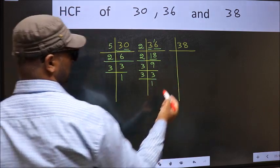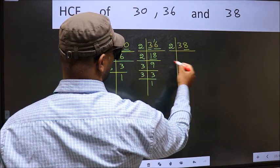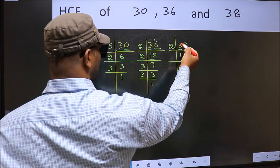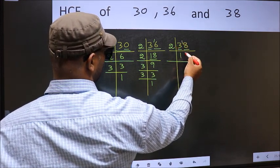Now the other number. Last digit 8, even so take 2. First number 3. A number close to 3 in 2 table is 2 times 1 is 2. 3 minus 2 is 1, 1 carried forward 18. When do we get 18 in 2 table?